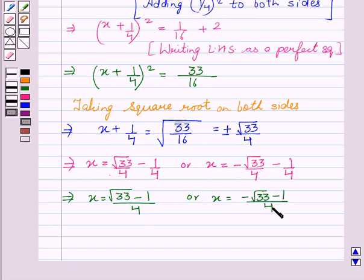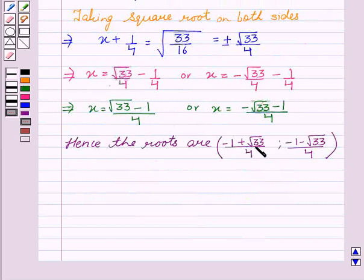Hence, the roots are (-1 + √33)/4 and (-1 - √33)/4. This is the required solution of the given equation.